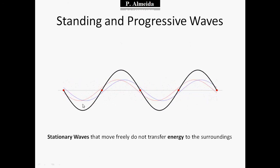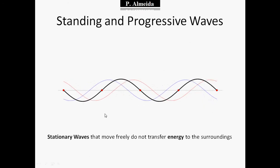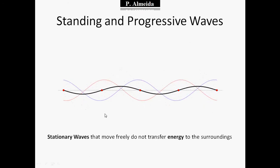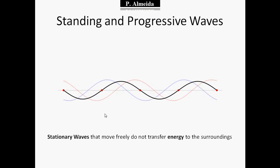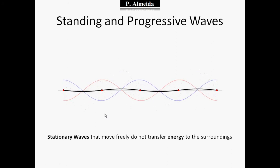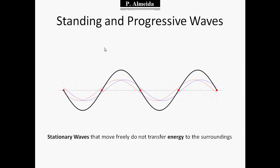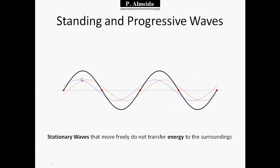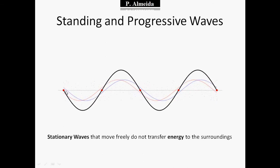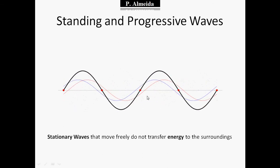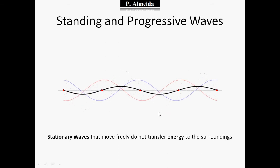A standing wave looks like this black one — it looks like it's not moving left or right. It's created when you have progressive waves moving in relation to each other and the amplitudes and frequencies are the same. A standing wave doesn't stay still forever; it just happens to have the same points where we have nodes and the same points where we have antinodes.